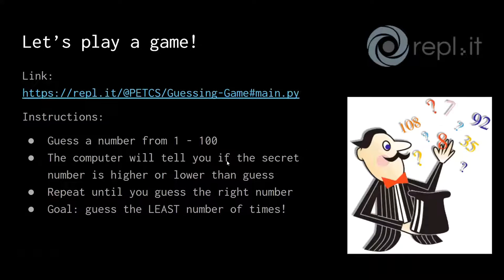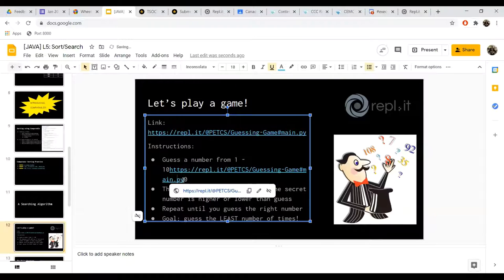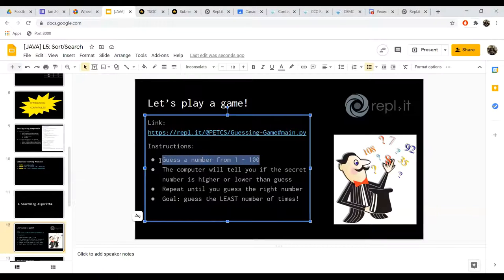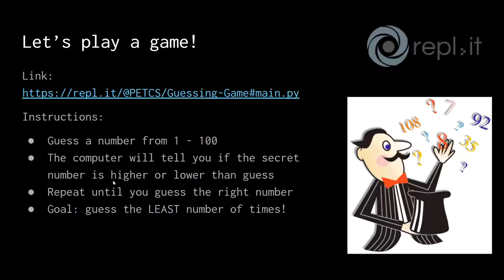For the searching algorithm, I want you guys to play this game — I spent a lot of time making it, so I'd really appreciate it if you play. It's written in Python but I'll explain the code later in Java. Your instructions are: you have to guess a number from 1 to 100, and the computer will tell you if the secret number is higher or lower than your guess.